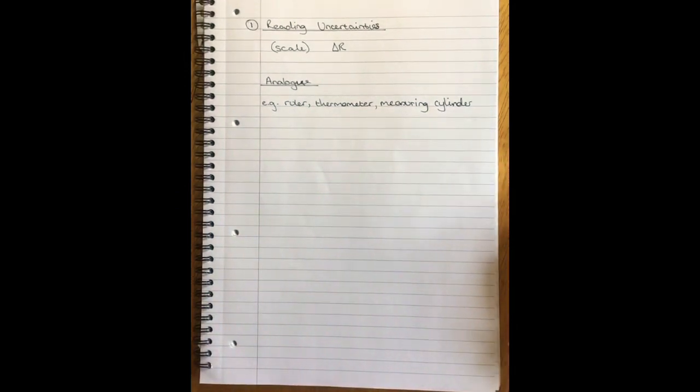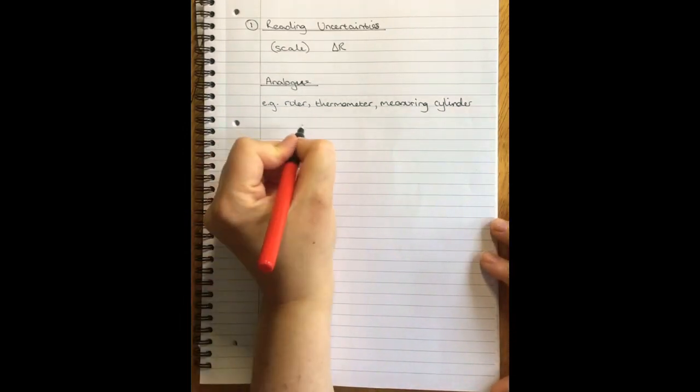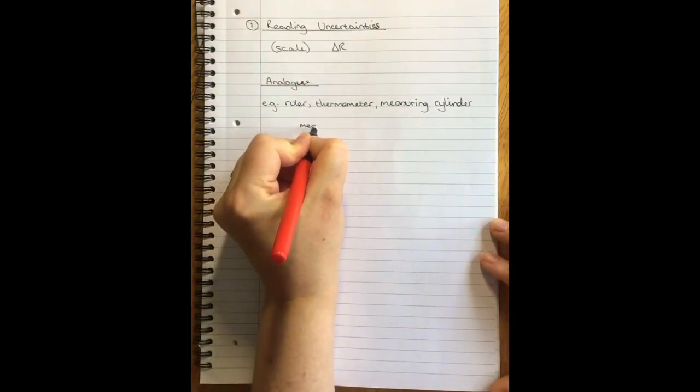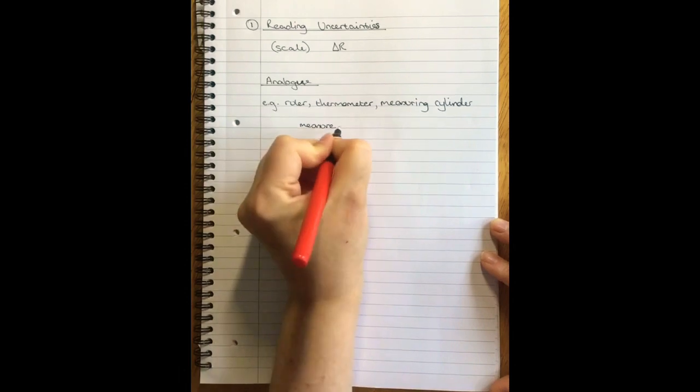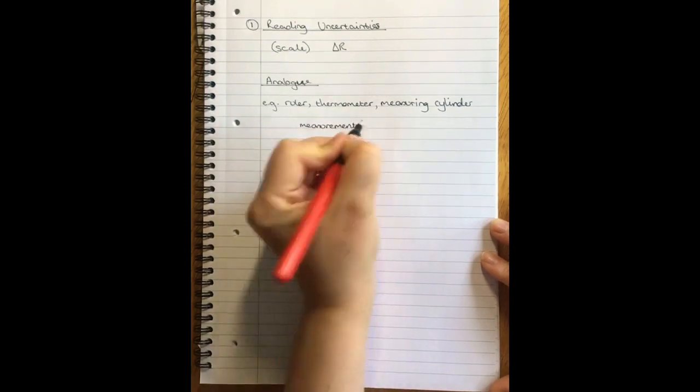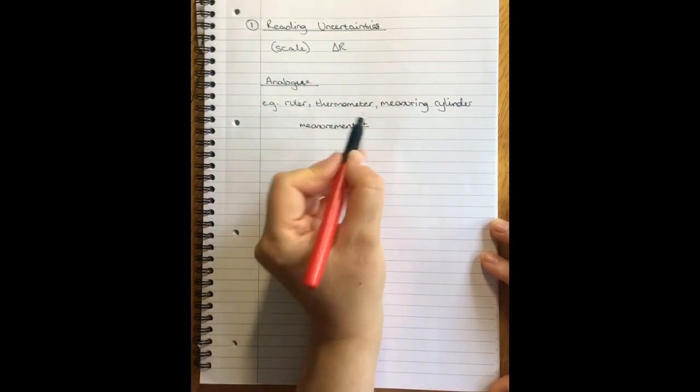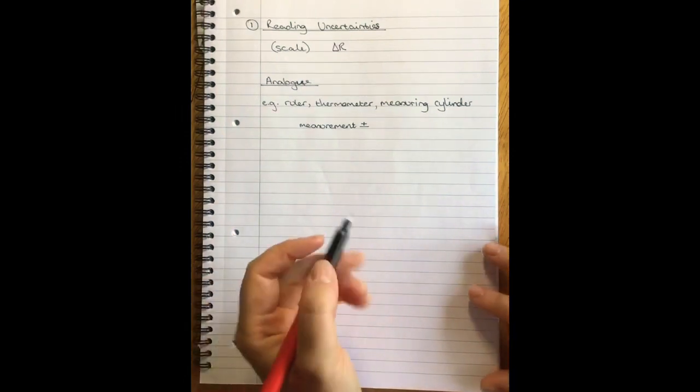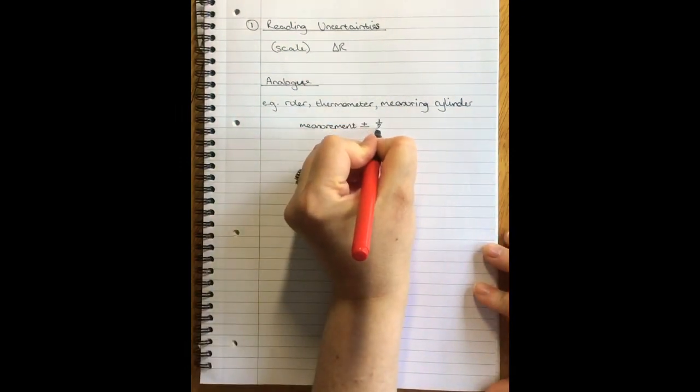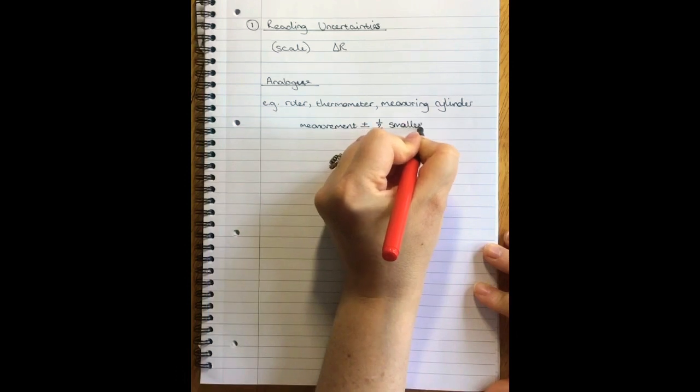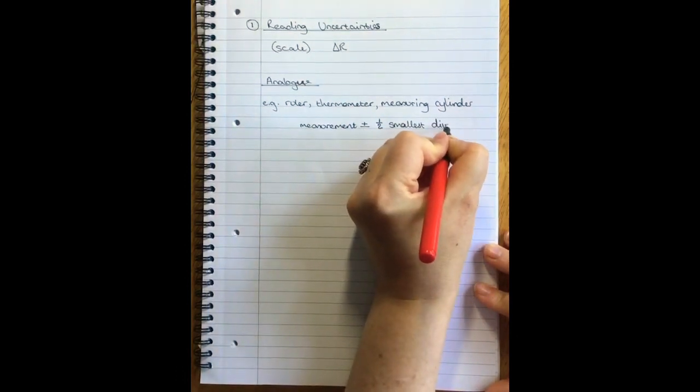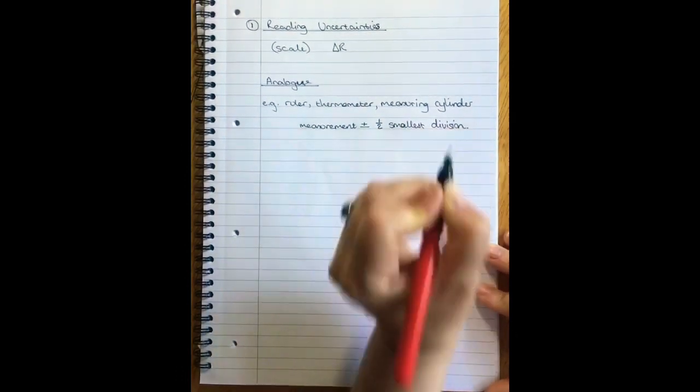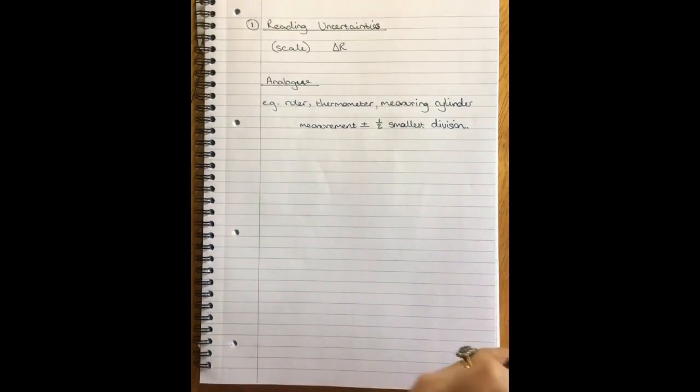The reading uncertainty for all analog scales looks like this. Measurement plus or minus, so that's describing the range, half the smallest division.